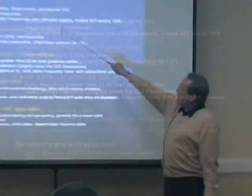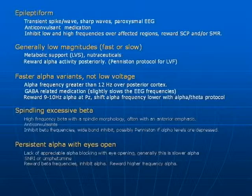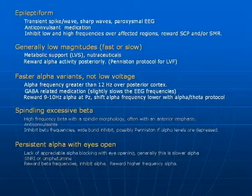The low voltage slow EEG is a toxic or metabolic variant. The low voltage fast variant is over-arousal. For the slow variant, we do metabolic support and nutraceuticals. For low voltage fast, it's over-arousal, and here the Penniston-type protocol for alpha-theta with an SMR prime to get them a little bit rhythmic ends up working very nicely. And in the application of addiction, there's a 2008 white paper that actually suggests that addiction as an application area can probably claim 'probably efficacious' as a level of efficacy.